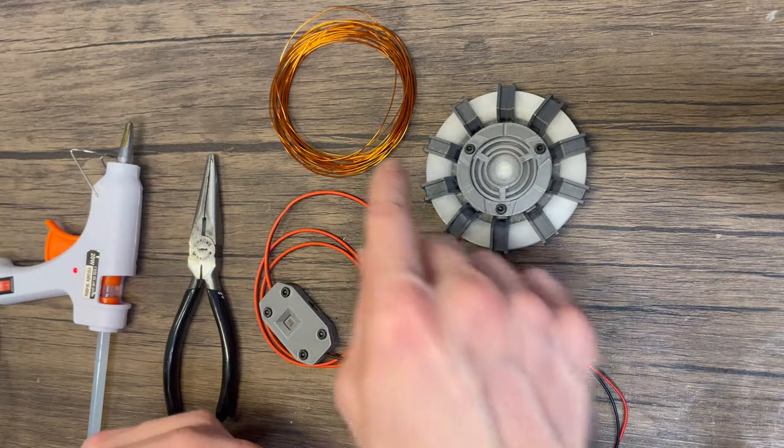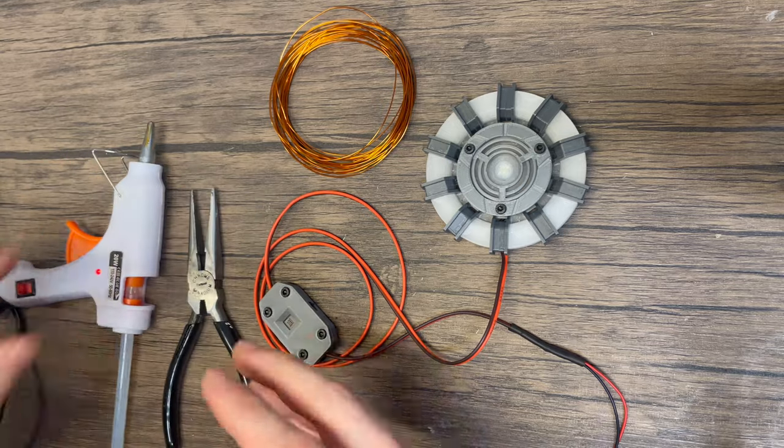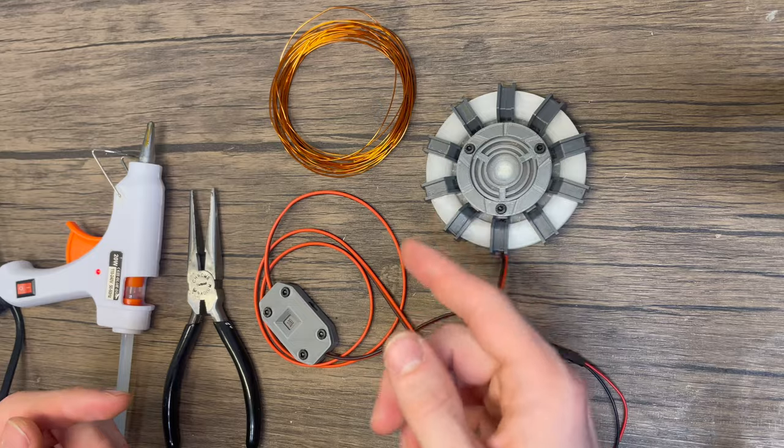So the only thing that you need to get this coil onto here is a pair of pliers and a hot glue gun. A tape measure could be good so you can measure 18 inches for each coil.